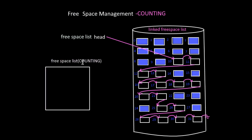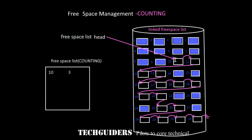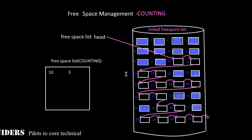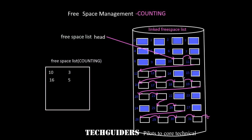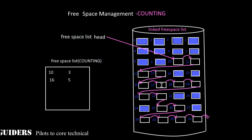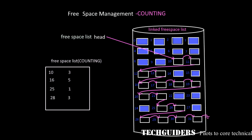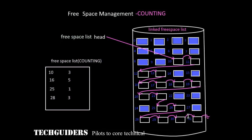In counting, the free space list consists of the address of the first free block — here it is block 10 — and the number of contiguous free blocks after it, which is 3. Then the address of the next free block, which is 16, and the count of contiguous free blocks after it, which is 5. Again, the address of the next free block, and the number of contiguous blocks after it is 1. The next free block is 28, and the count of free blocks after it is 3.